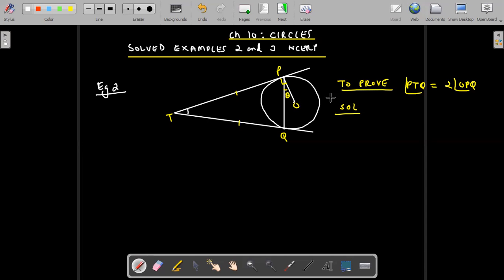We are going to assume let this angle be theta. You can assume x also, so let angle OPQ is equal to theta. This is the unknown angle and what we need to prove is that this is twice of this.